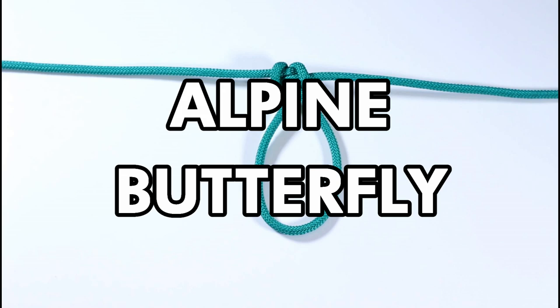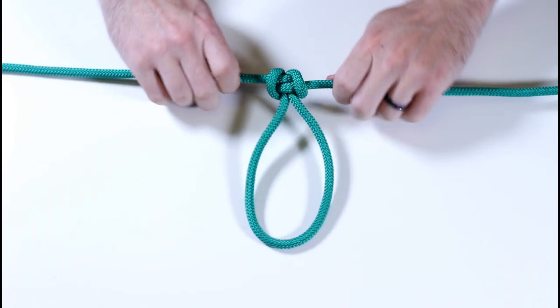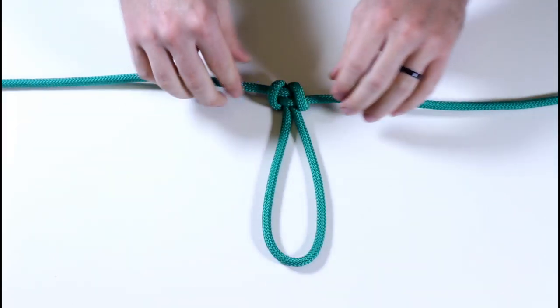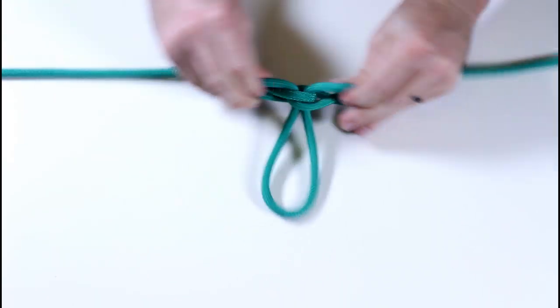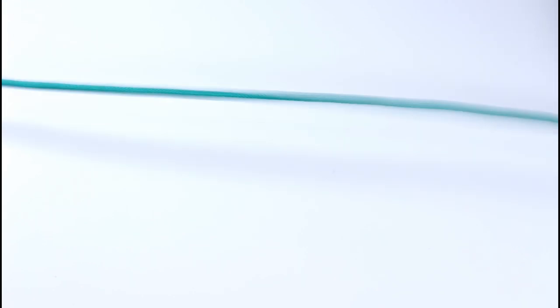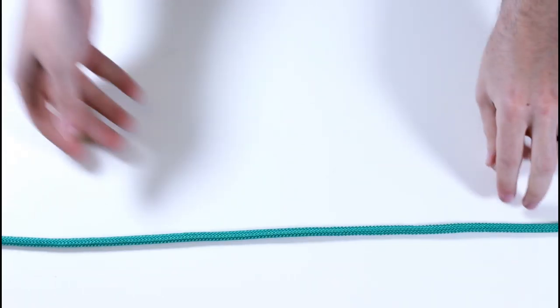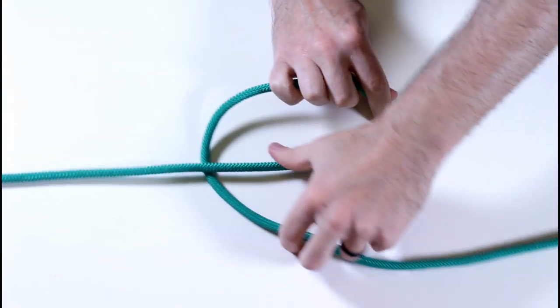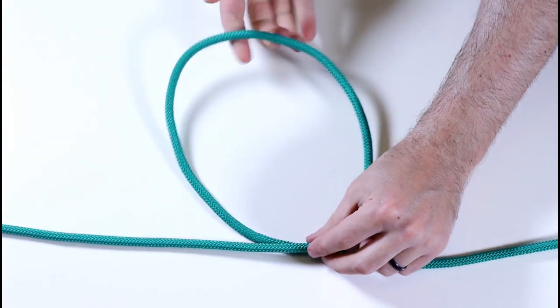The alpine butterfly. If you need a loop in the middle of a rope, maybe to make a ladder or to hang a lantern or something, the alpine butterfly is both very secure and very pretty. Just grab the rope where you want the loop to be, like here for example, and twist once, and then again.